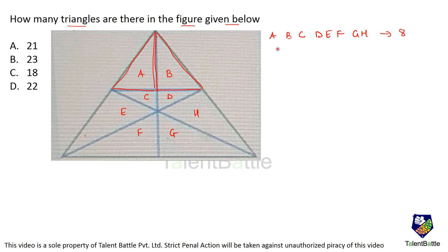Next I am going to start combining two triangles to get larger triangles. A and B combined give one big triangle. A and C is one triangle, B and D is one triangle, F and G give one triangle, and C and D give one more - that is five triangles from combining pairs.